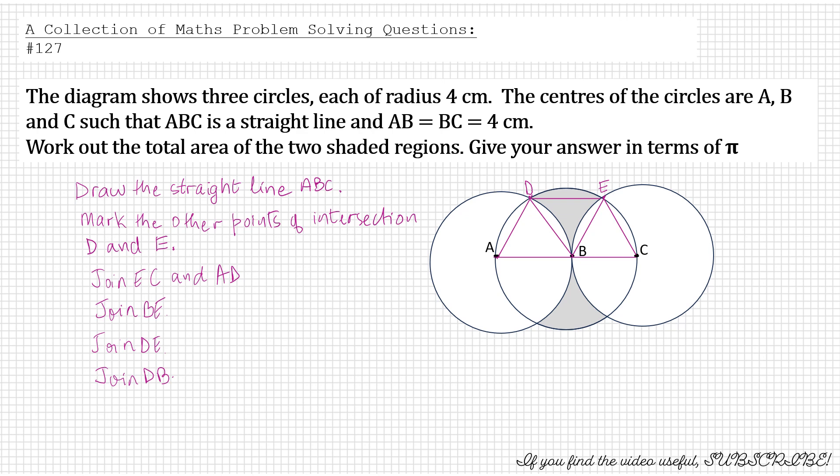So now you have three triangles ADB, as this triangle, you have triangle DBE and triangle EBC. Now note that these three triangles are equilateral and they are all congruent to one another. So they are all equal. The reason being they are formed by the radius.